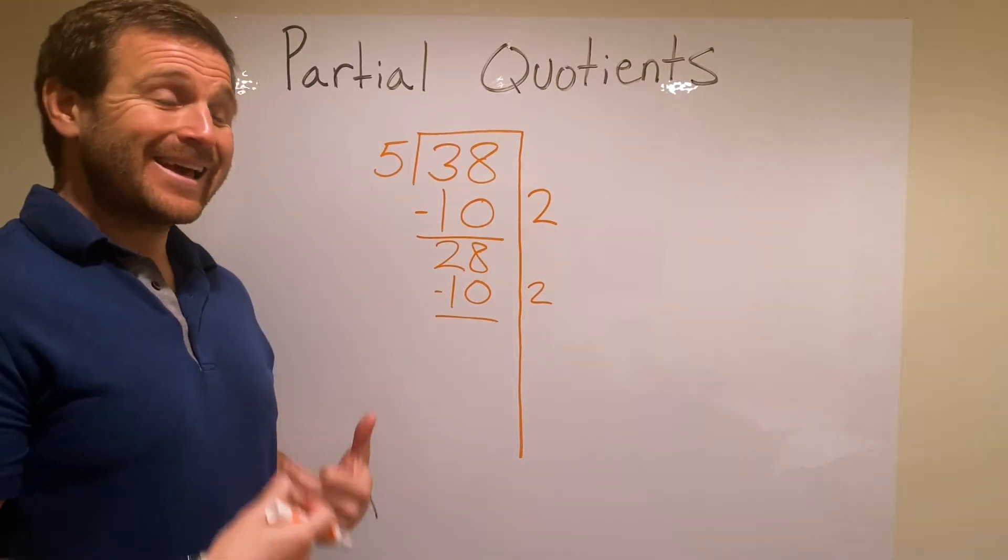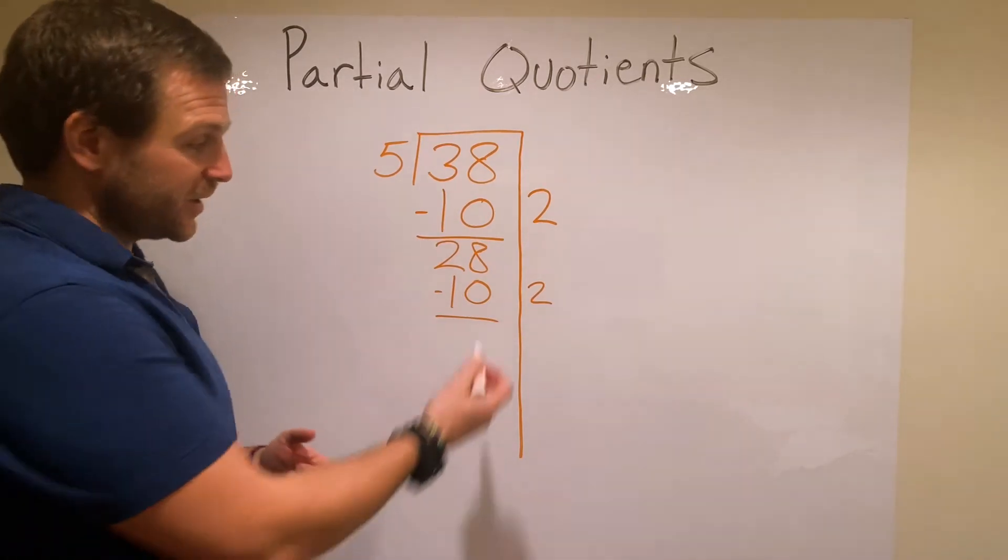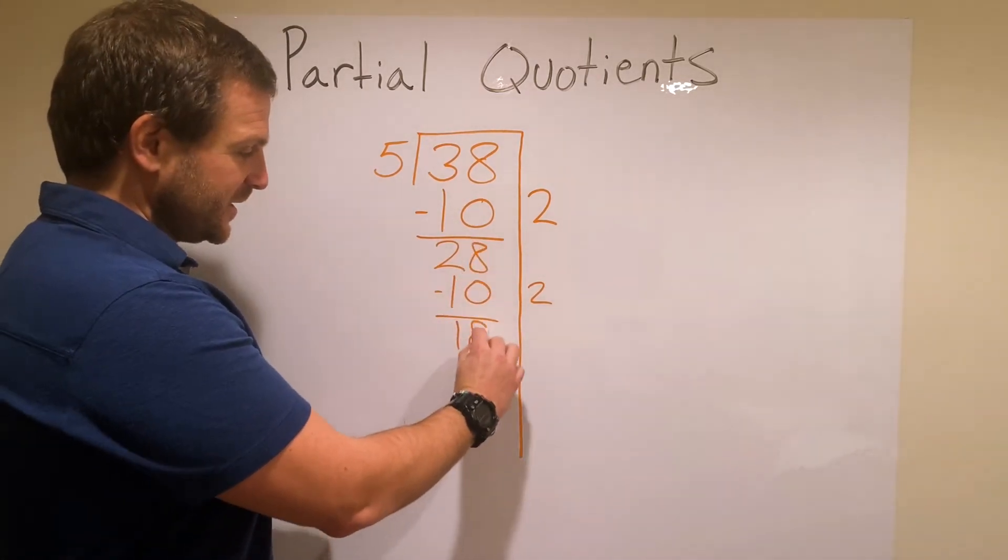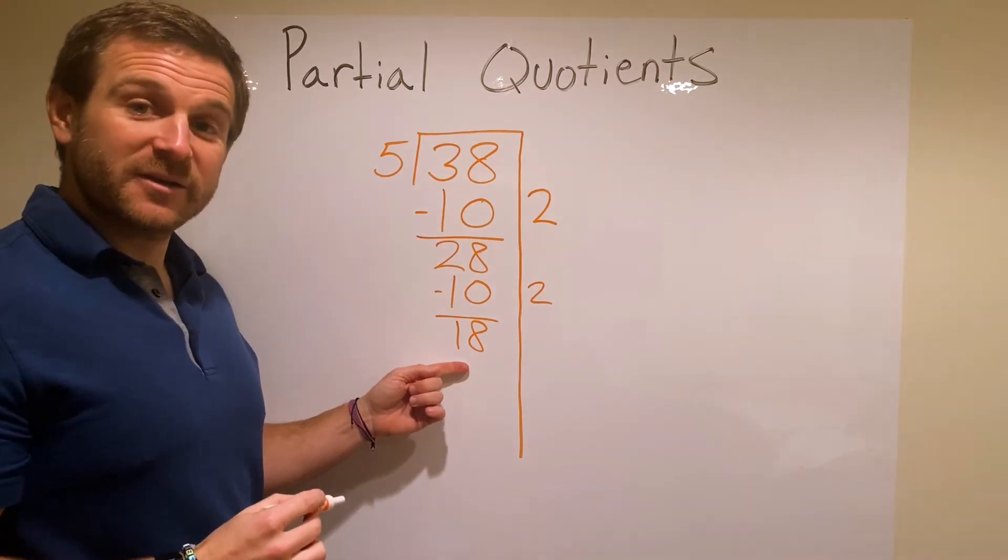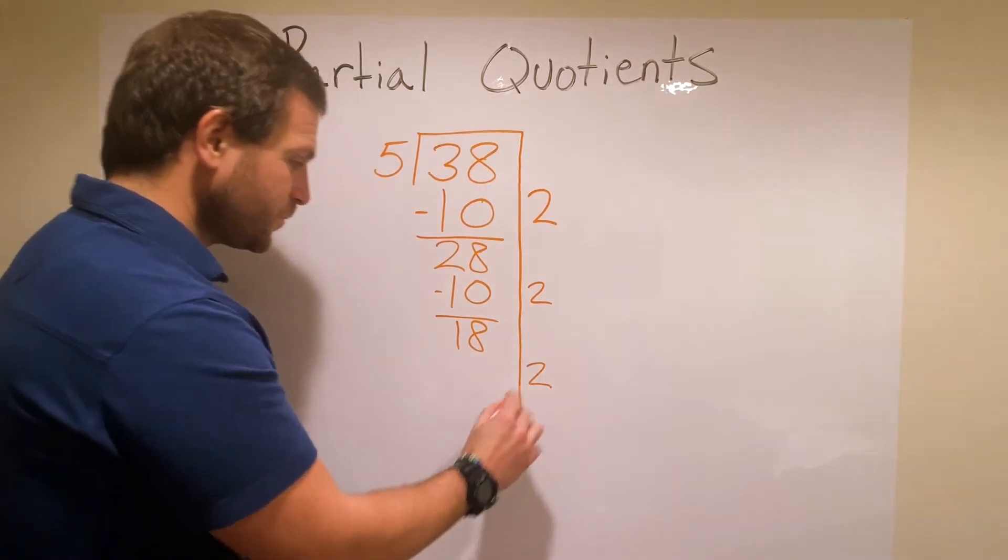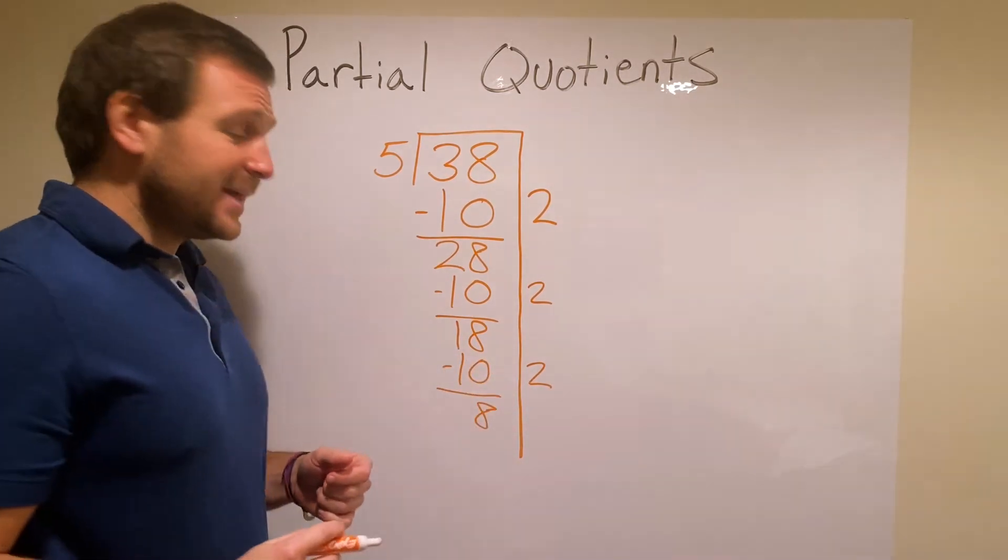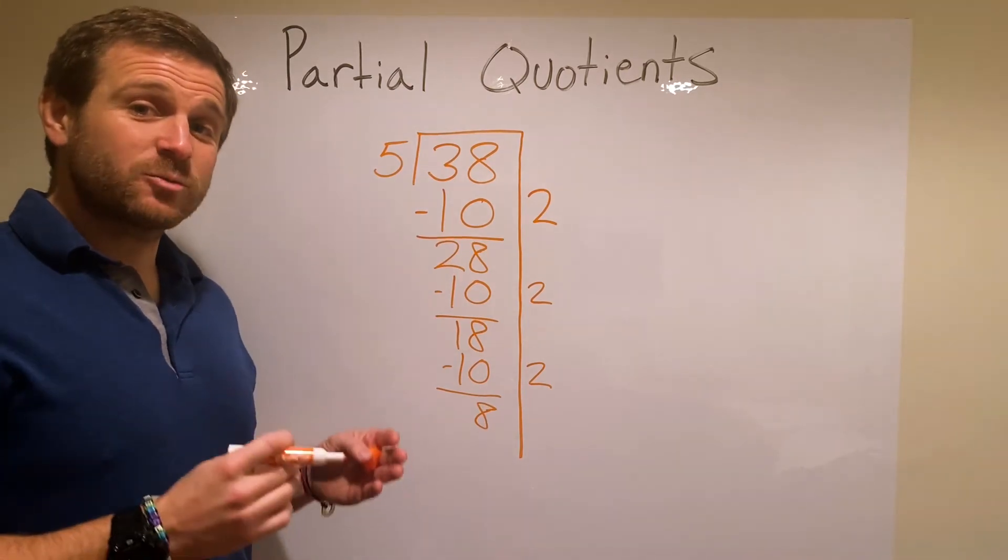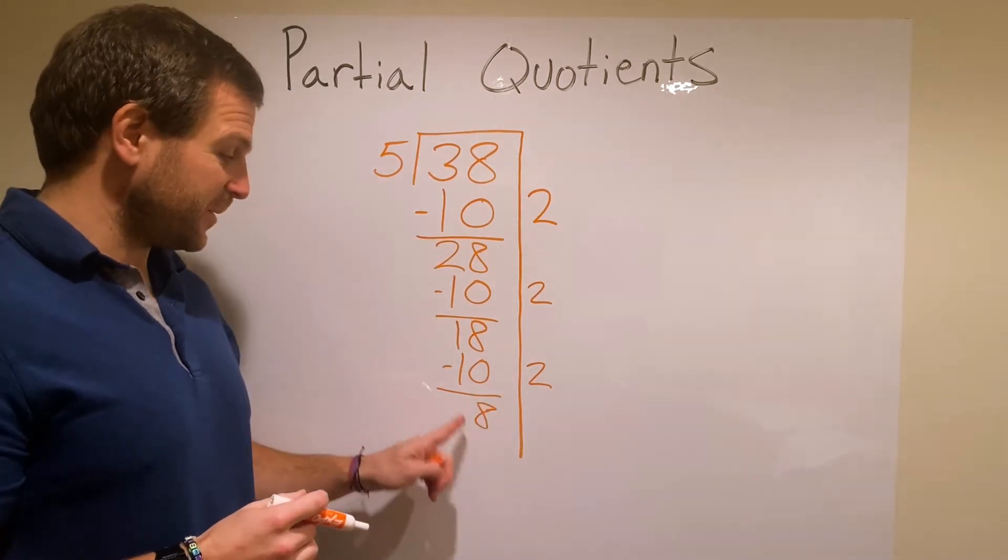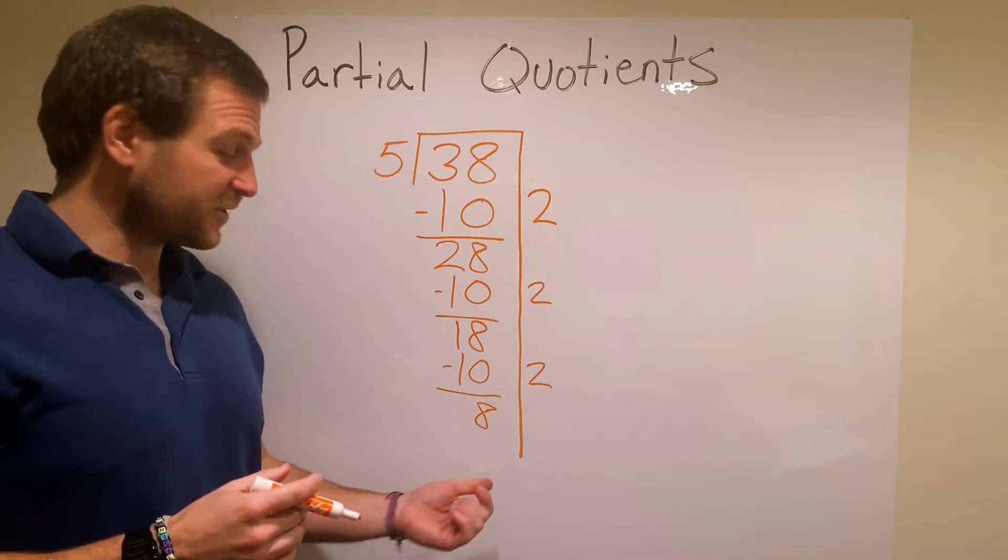I can repeat this process until I either run out or have to use a smaller number. So again I'm going to get down here to 18, and 18 is bigger than 10, so I can remove 2 more groups of 5. 2 more groups of 5 again is 10, and I get down to 8. Now at this point I can't remove 2 groups of 5 because I would try and subtract 10 and it wouldn't work. There's not 10 left. There's only 8.